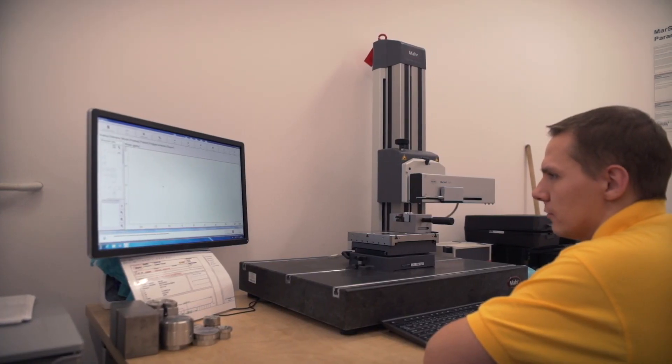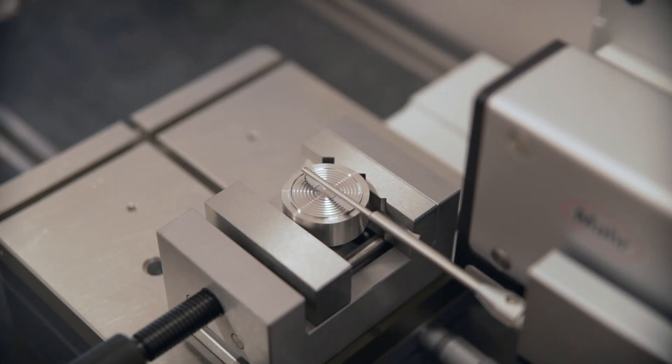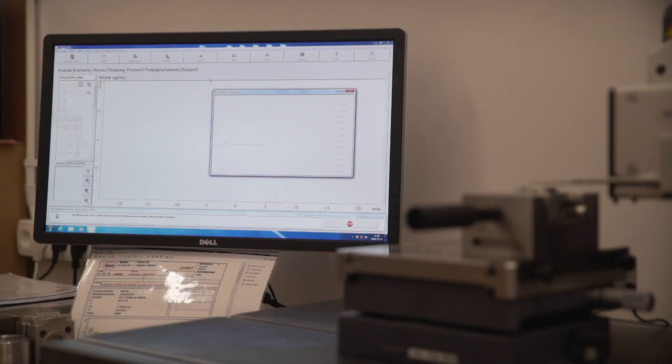All parts that were produced on CNC machines are subject to technical control. Among other things, measurement of parts on a contour measuring station is made.